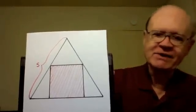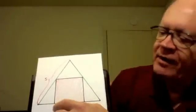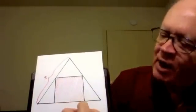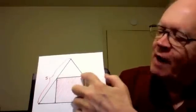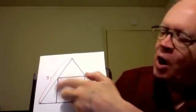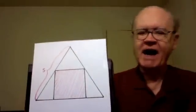And we have this square. The base of the square is part of the base of the triangle, and each of the two upper corners of the square is on a slanted side of the triangle.